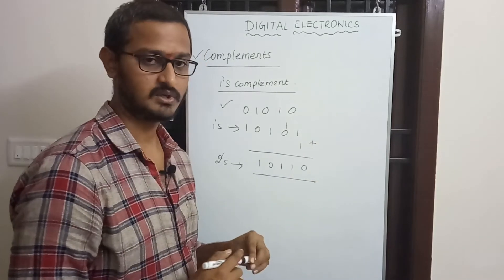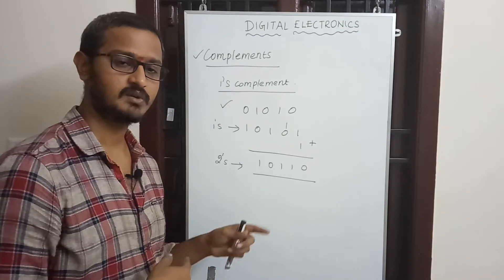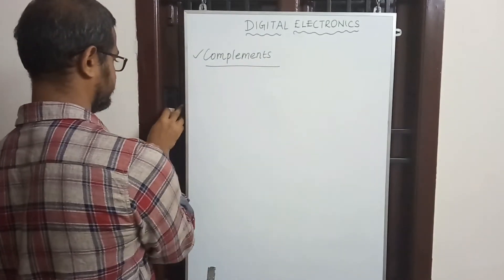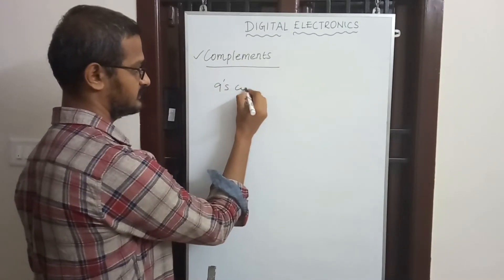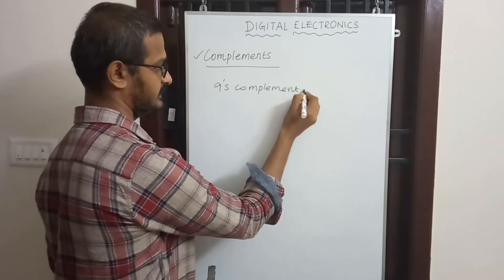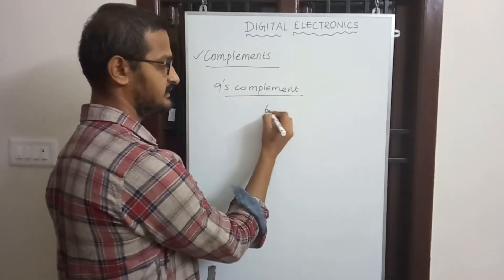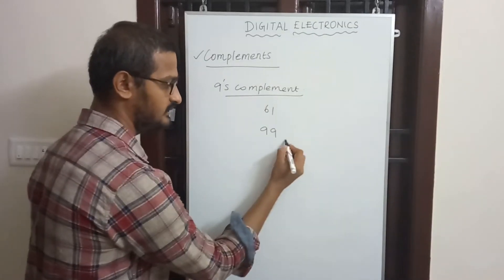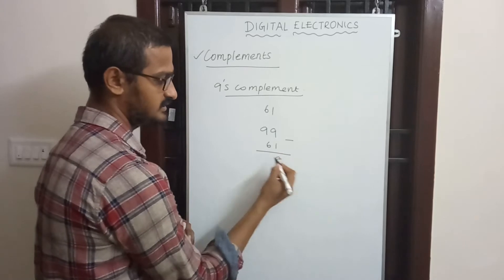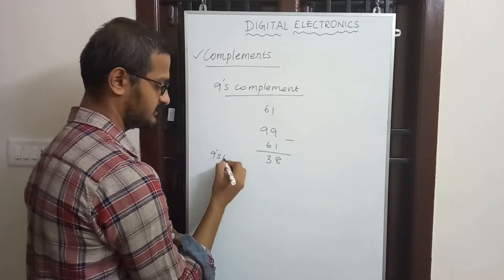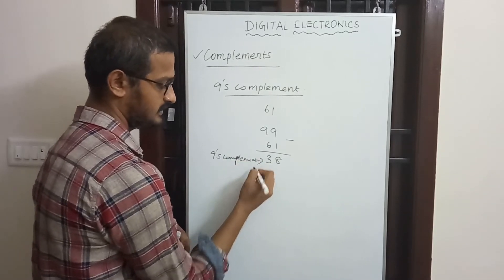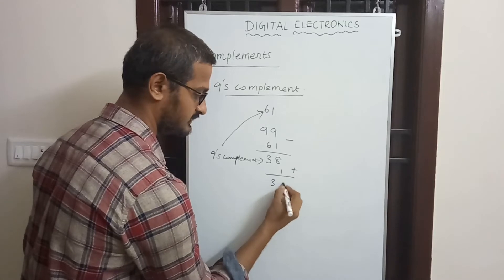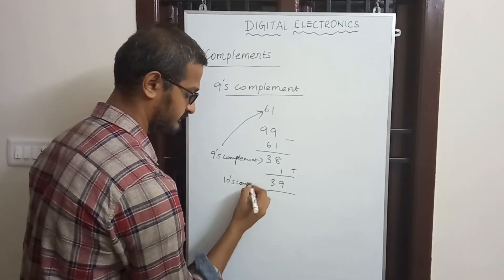Now for 9's and 10's complement: for the number 61, which has two digits, we use 99. So the 9's complement is 99 minus 61: 9 minus 1 is 8, 9 minus 6 is 3, giving 38. This is the 9's complement of 61. Adding 1 to 38 gives 39, which is the 10's complement.